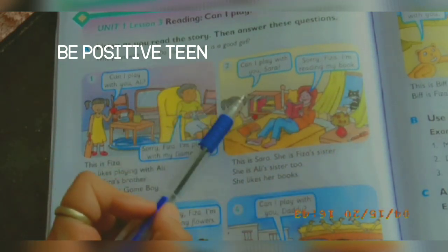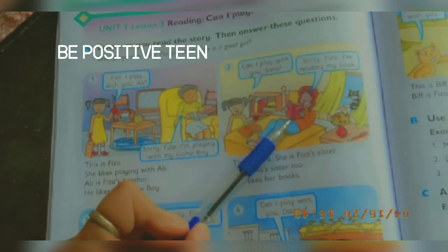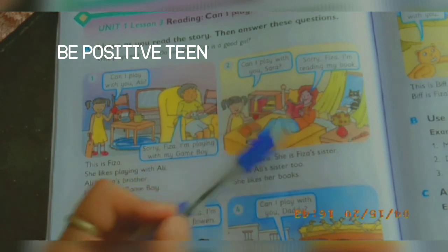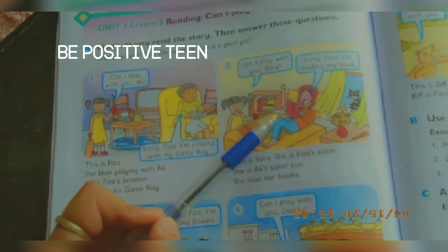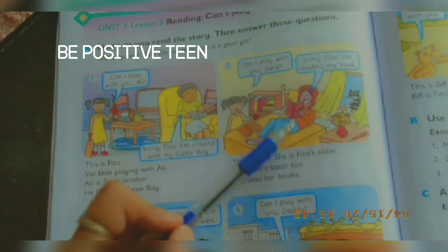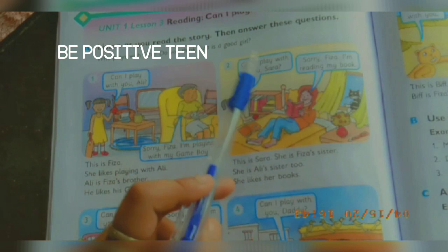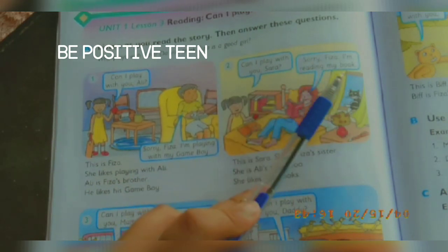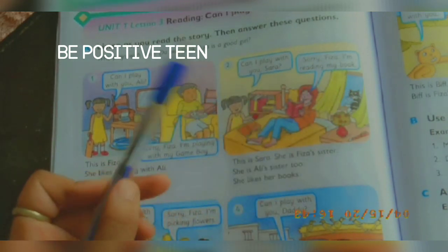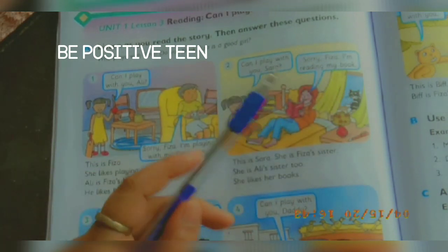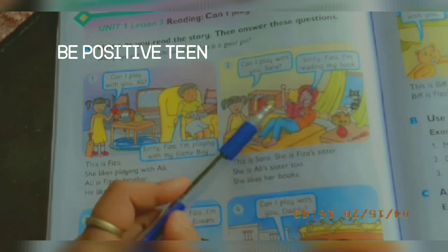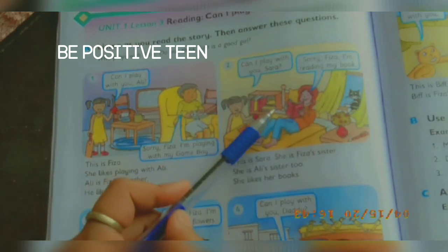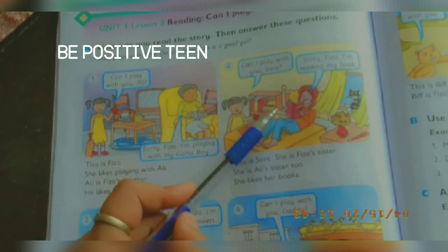Fizza asks her sister: Can I play with you, Sarah? Sarah is Fizza's sister. Sarah replies: Sorry Fizza, I'm reading my book. Sarah refused Fizza because she is reading her book and that's why she is not playing with her.